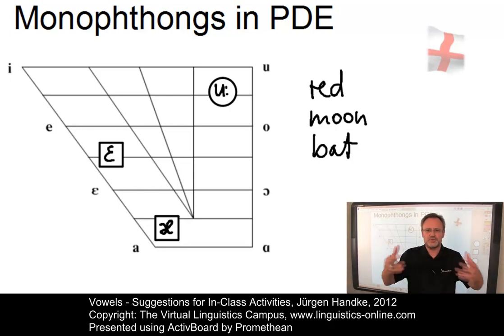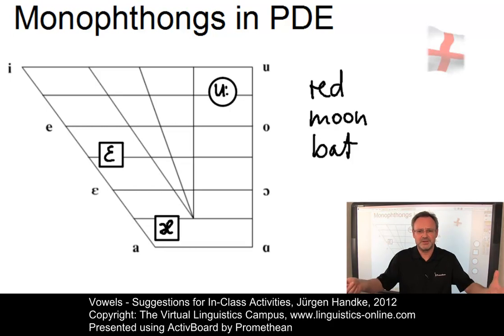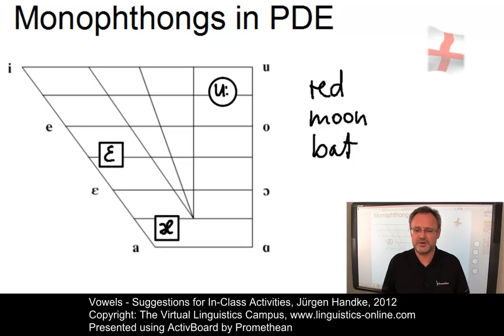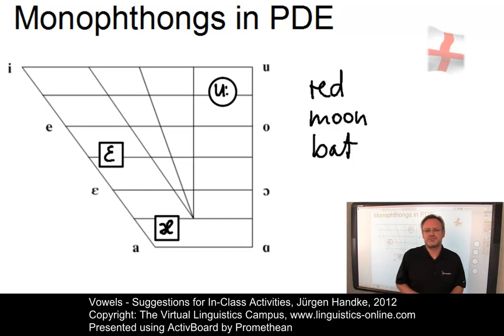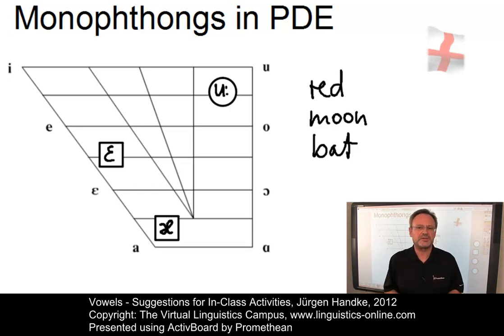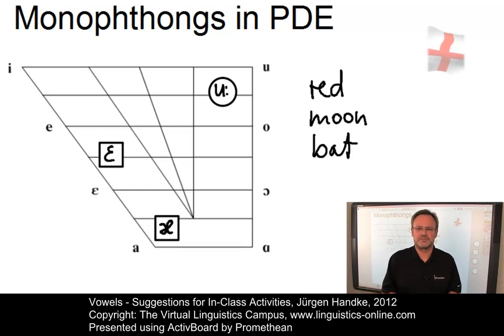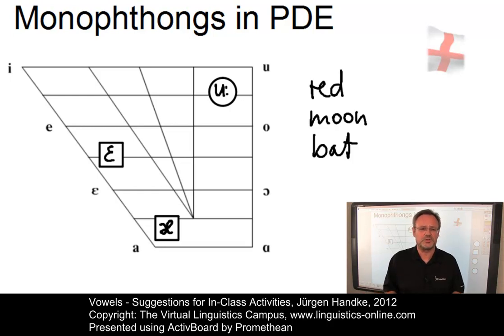When all students have collected the monophthongs of present-day English — that is the twelve monophthongs, or even less — then the class instructor, who normally sits in the back during the active plenary meeting, comes back to the front, optionally corrects and discusses the data collection by the audience. This is a very good exercise for getting students involved in what you are doing.